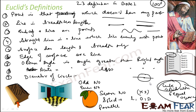All these definitions were given by Euclid: what is point, line, straight line, surface, edge, obtuse angle, acute angle, diameter, odd number, even number, height of a figure. This is an exhaustive list of 100 plus definitions, but I have covered only a few of them — just for your understanding of what a definition means.